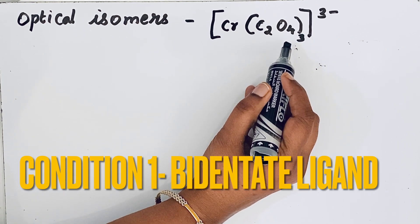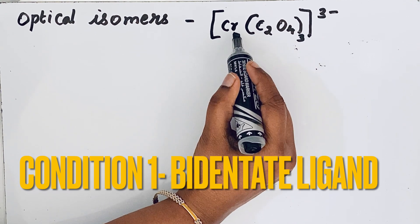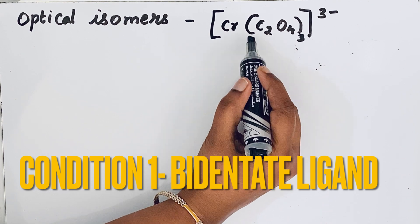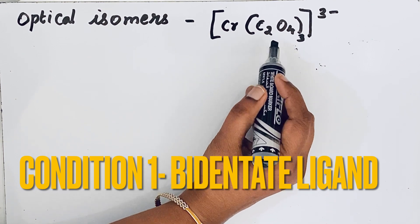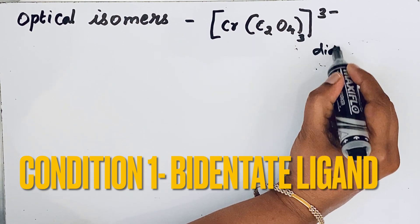So what is bidentate ligand? If that ligand is attached to the central atom by two donor atoms, then it is called bidentate ligand. So there is the presence of bidentate ligand. This you can call didentate also.